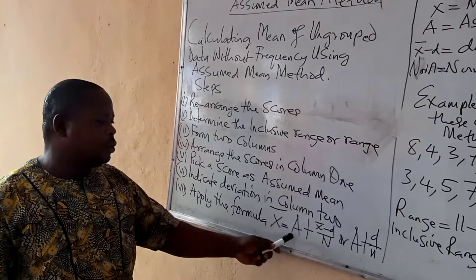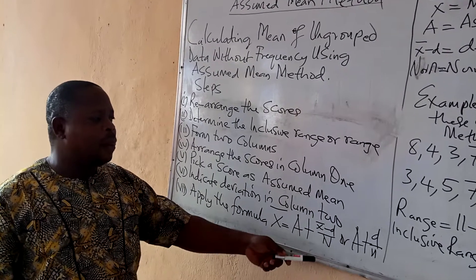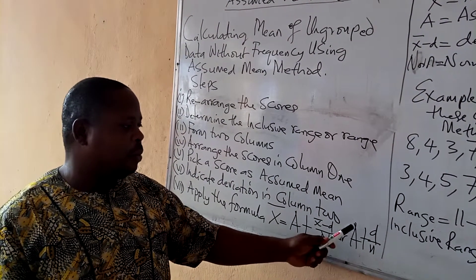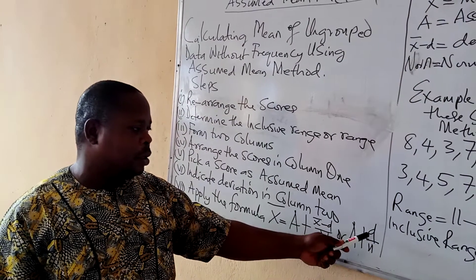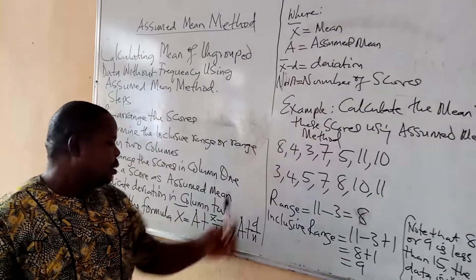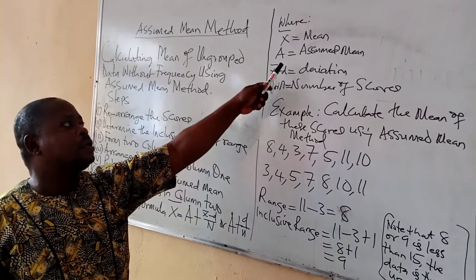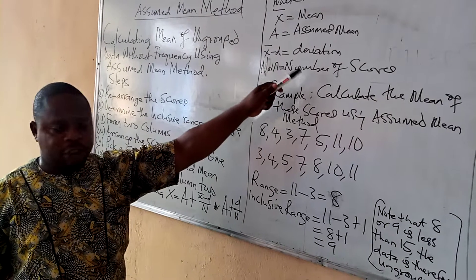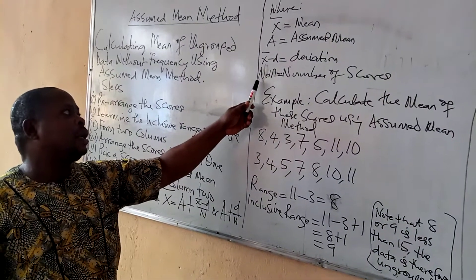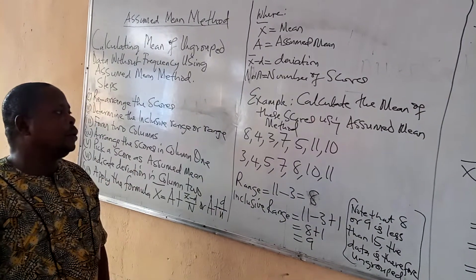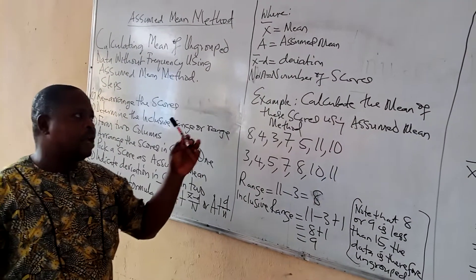The formula is: Mean equals assumed mean plus the sum of deviations all over N. This can also be written as: M = A + (Σ(M - A)) / N, where M stands for mean, A stands for assumed mean, M minus A stands for deviation from the assumed mean, and N stands for number of scores.